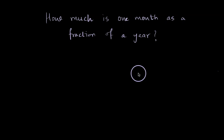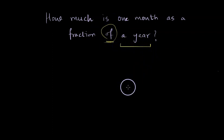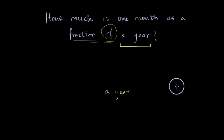Let's solve a few worded problems on fractions. How much is one month as a fraction of a year? The way to approach such problems is to spot the word 'of' — whatever comes after 'of' always goes in the denominator of the answer, because our answer is going to be a fraction.